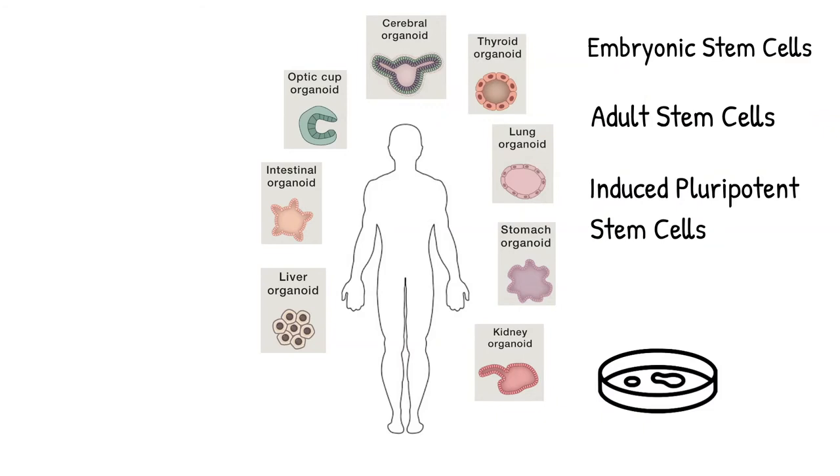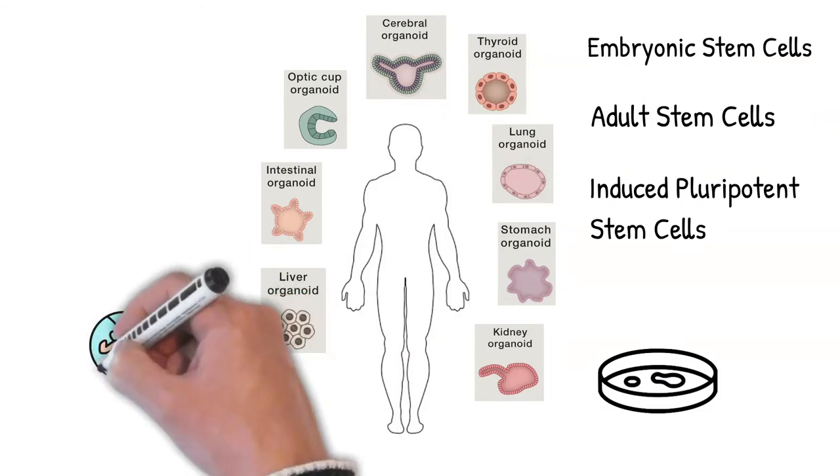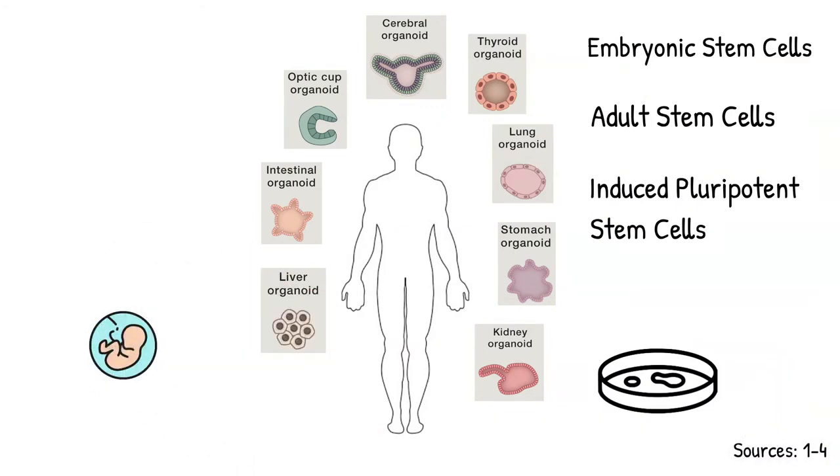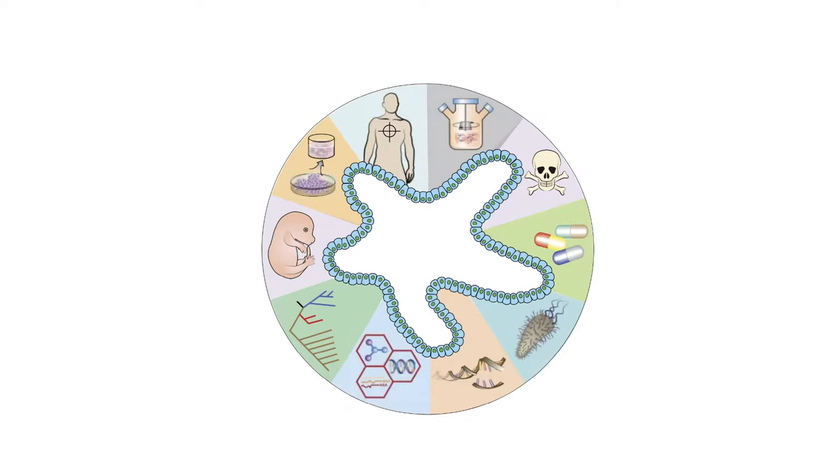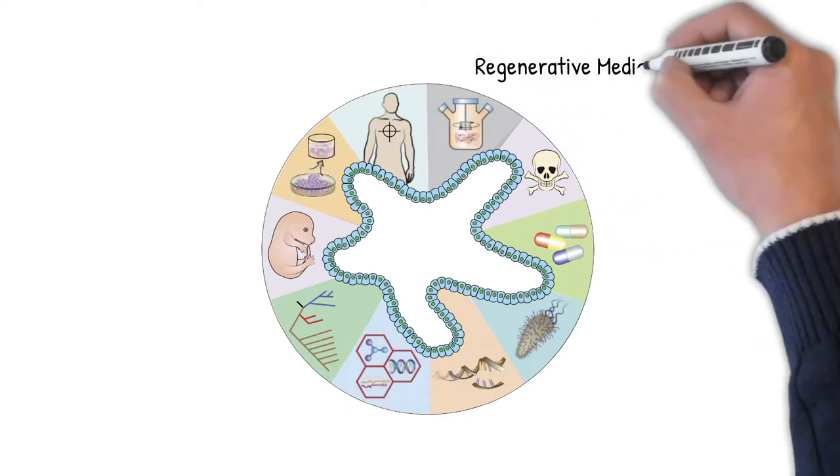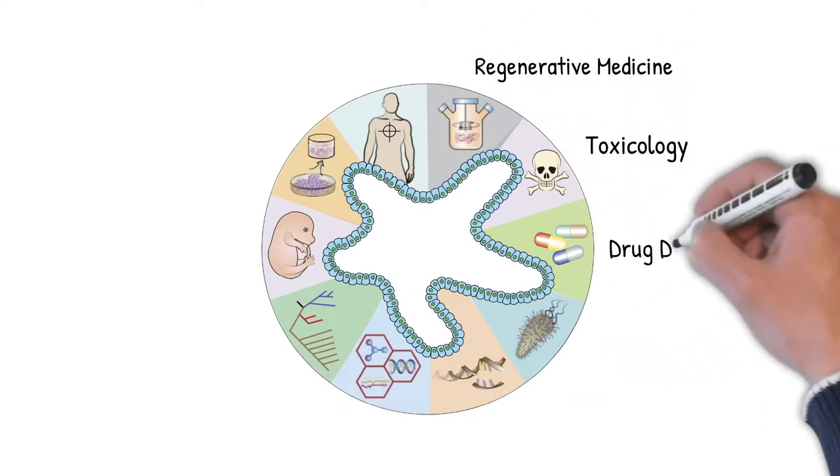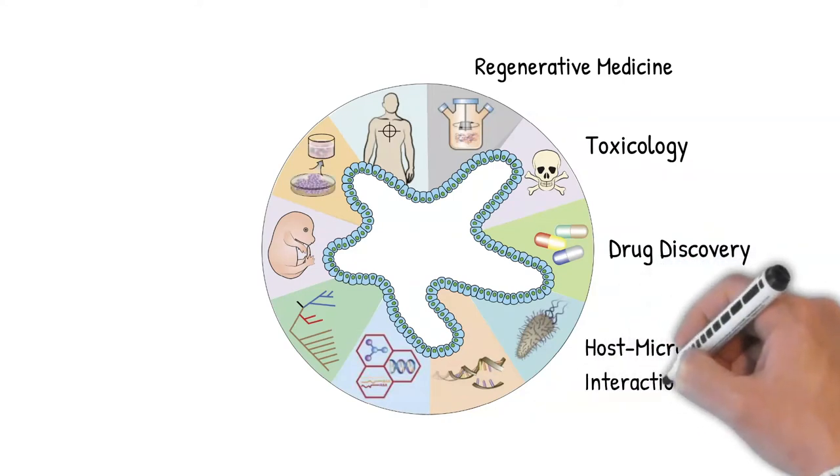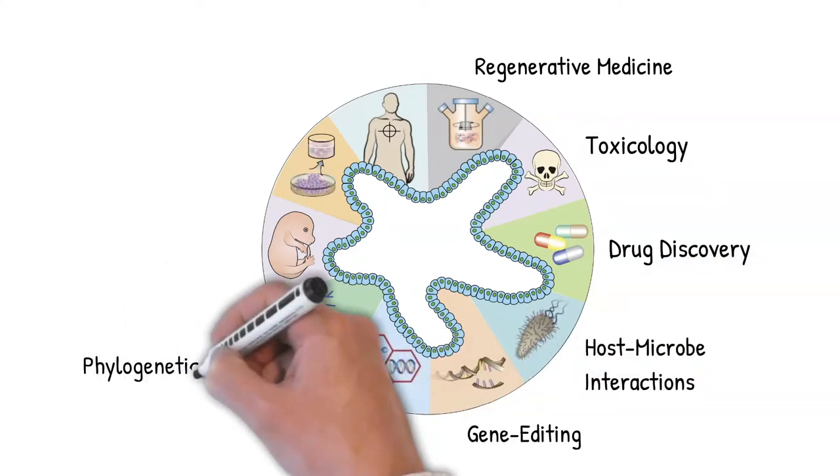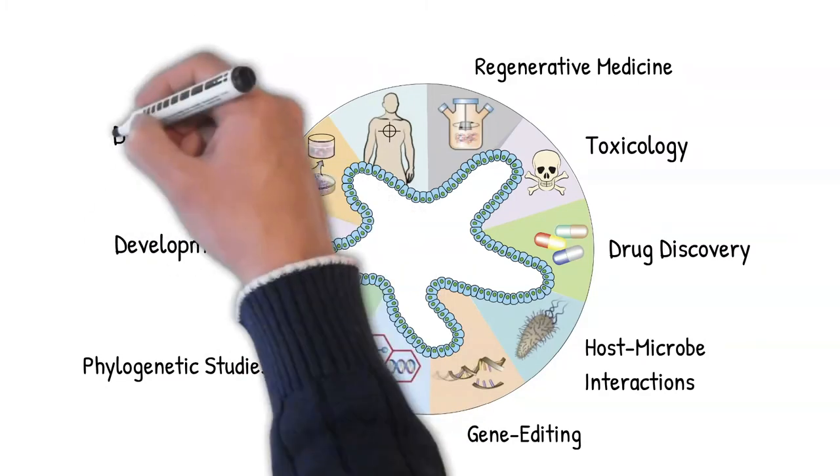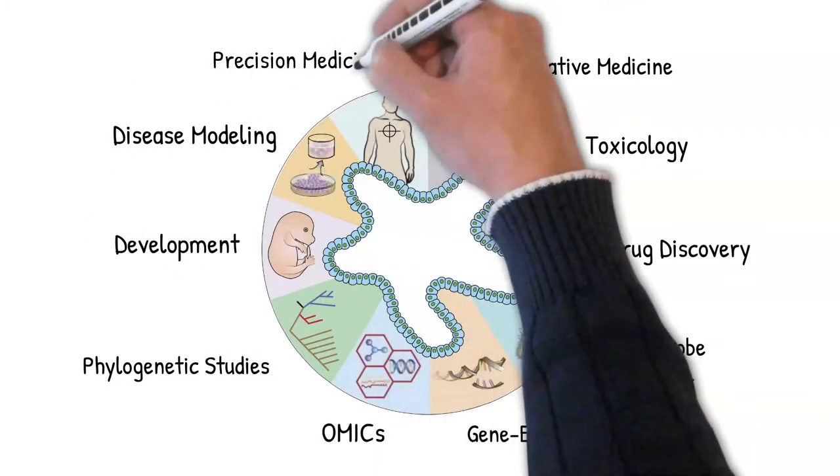They can even replicate the various stages of embryogenesis in embryonic development. These organoid models are used in a wide variety of experiments. To name a few: regenerative medicine, toxicology, drug development, host-microbe interactions, gene editing, omics, phylogenetic studies, developmental biology, disease modeling, and precision medicine.